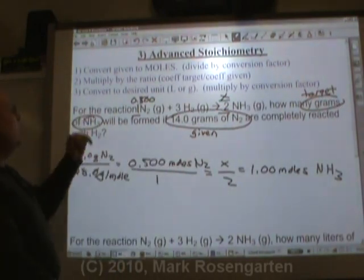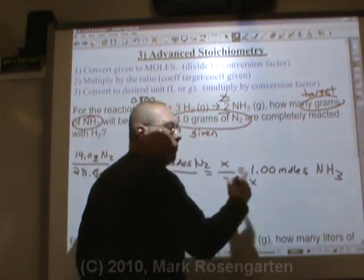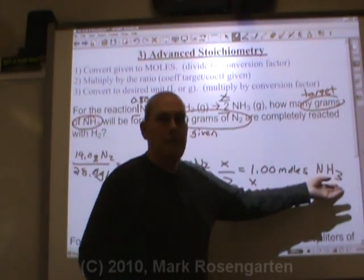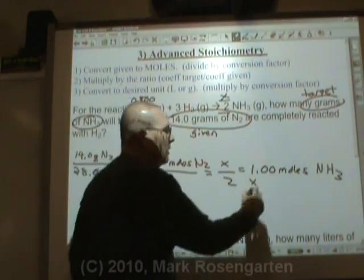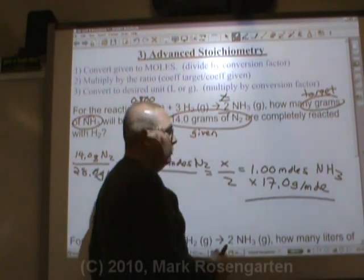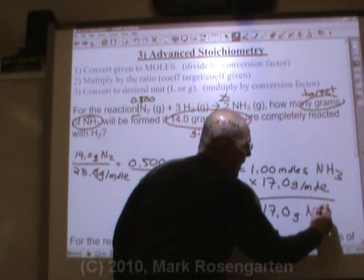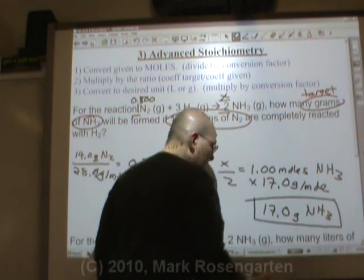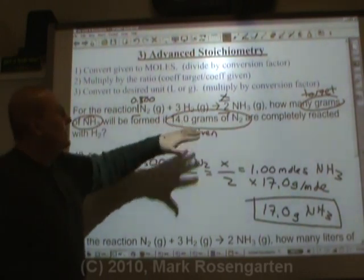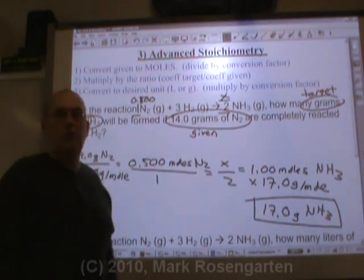Now it asks how many grams of NH3 will be formed. We have moles of NH3, so our next step is to multiply by the formula mass of NH3. N weighs 14 and each hydrogen weighs 1, so 14 + 3 = 17.0 grams per mole. Multiplying 1.00 moles by 17.0 gives us 17.0 grams of NH3. This means: if you react 14 grams of nitrogen with enough hydrogen, you will make 17 grams of ammonia.